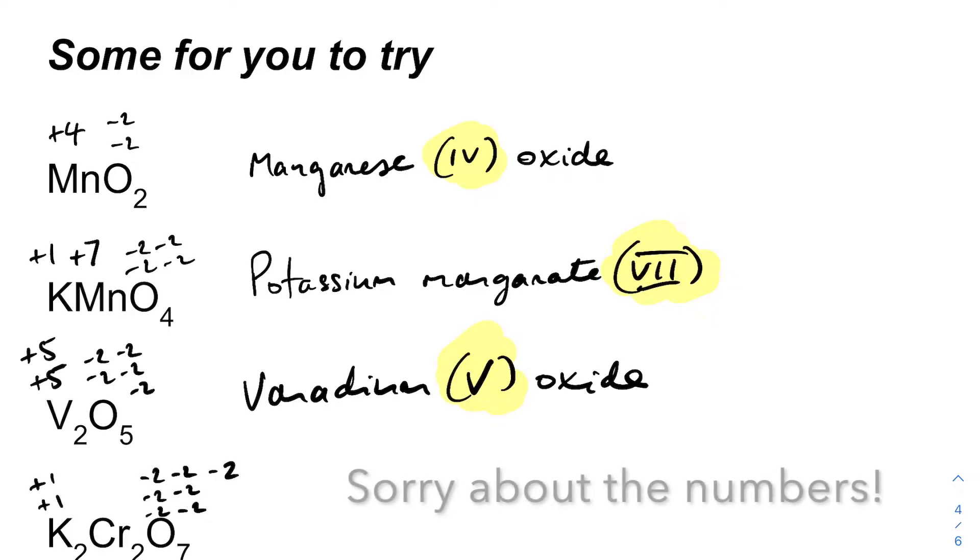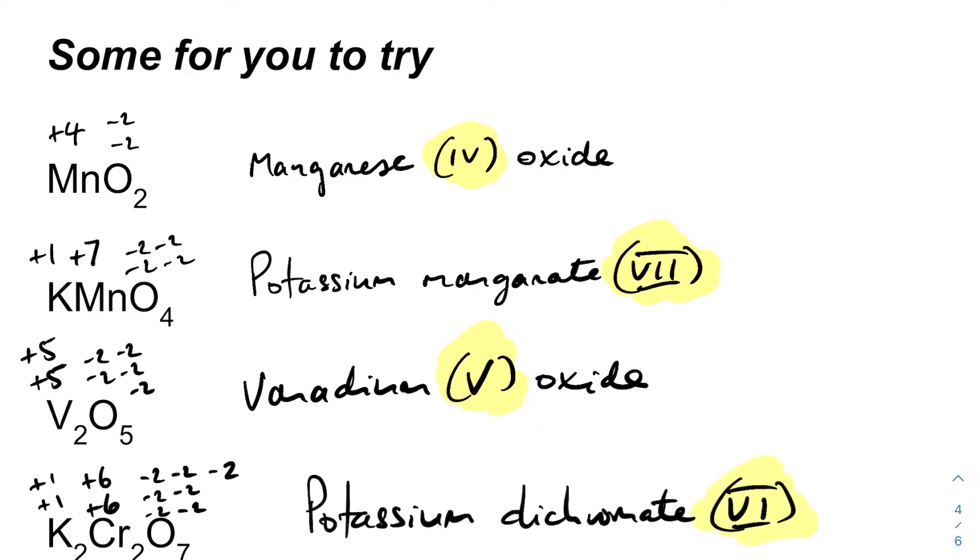And the last one, I've already made a start there, so we've got seven minus twos. We've got two plus ones for the two potassiums, so we'll just think about the numbers how they stack up at the moment. So minus fourteen plus two, so we've got minus twelve altogether at the moment. And so these are going to have to be plus six each to keep it neutral. So this is called potassium dichromate, so chromium and oxygen, chromate, but it's dichromate because there's two chromiums in there. Six, because the oxidation number of the chromium is plus six.